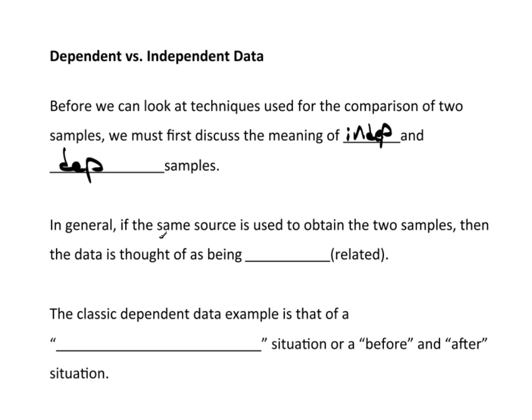Now, in general, if the same source is used to obtain two different samples, then the data is thought of as being dependent. In other words, they're related to each other because they came from the same source.